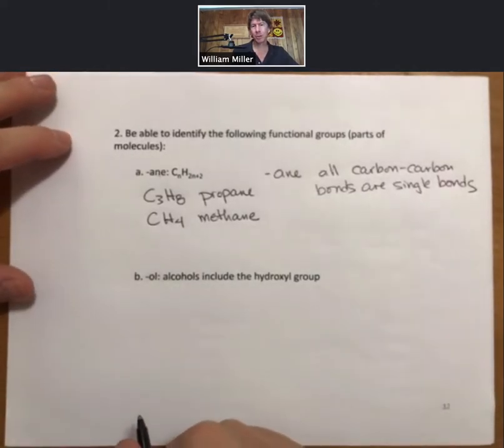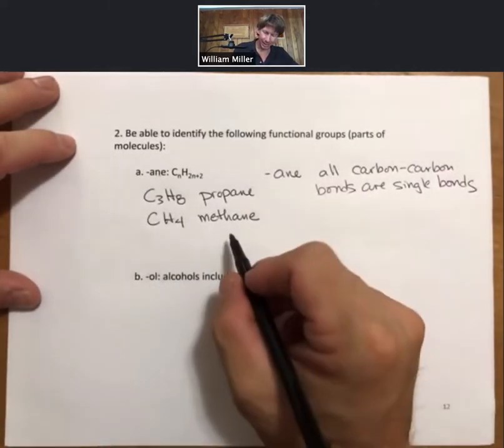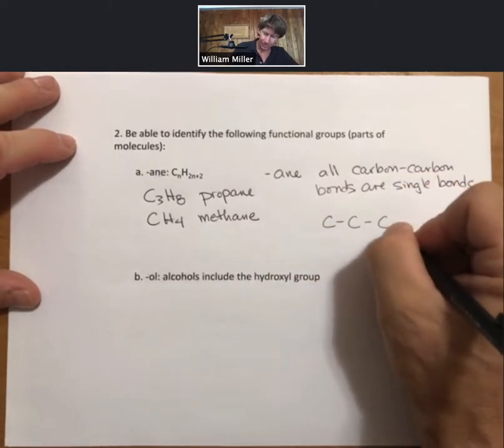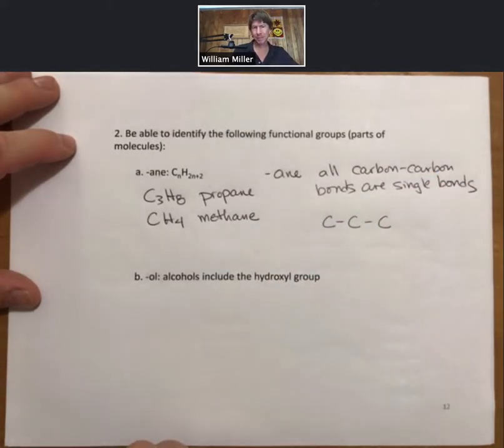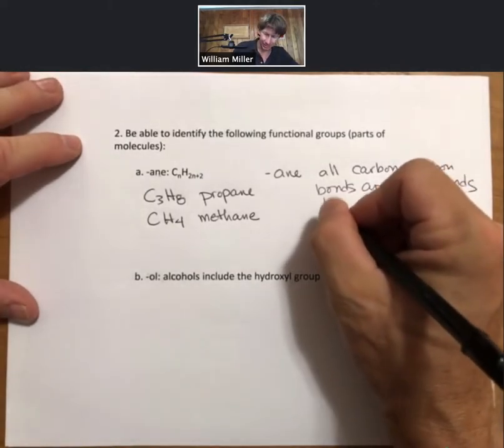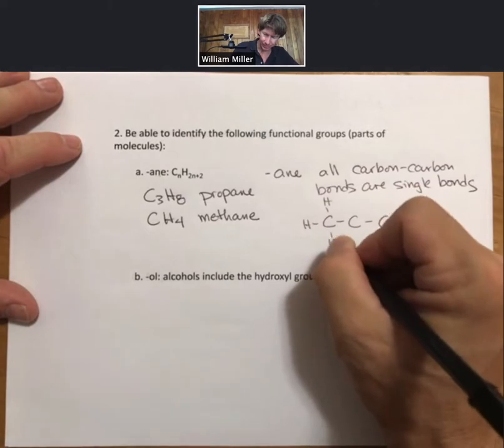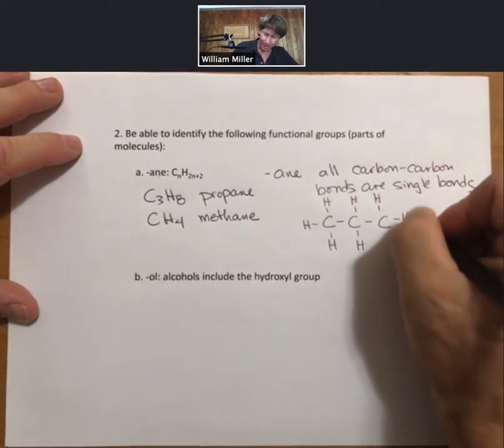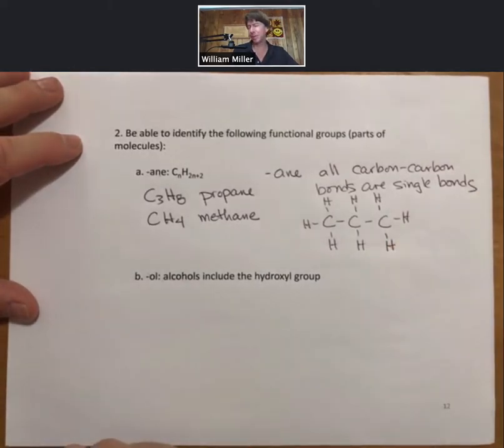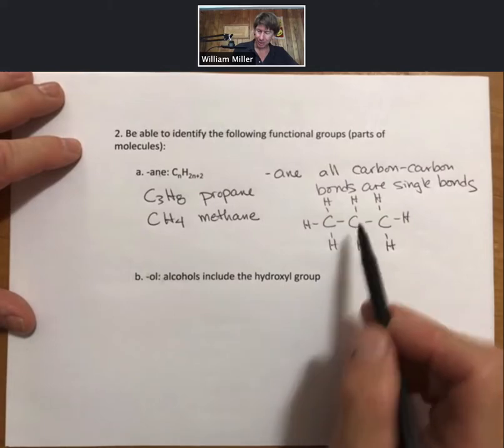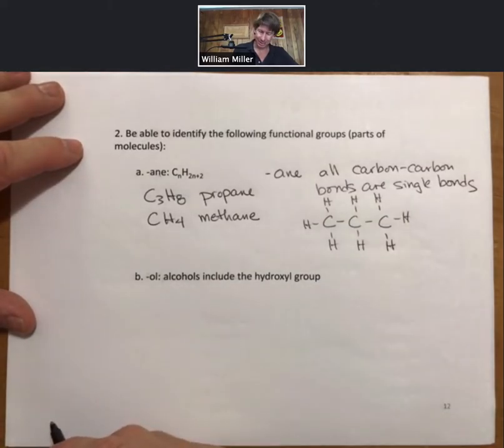And the A-N-E ending signifies that all carbon-carbon bonds are single bonds. And that means that in propane, we have three carbons. And I'm going to draw the Lewis structure, though we're not there yet in class. In hindsight, then when you look at your notes later, you'll be able to perhaps understand this a little better. But it does have all carbon-carbon bonds as single bonds.